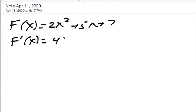So we're going to do a little f equal to 2x squared plus 5x plus 7. And when we take the derivative of that, f prime of x will be 4x plus 5 plus 0.